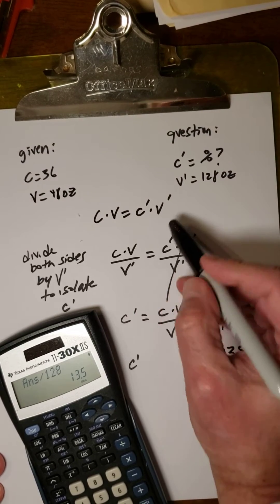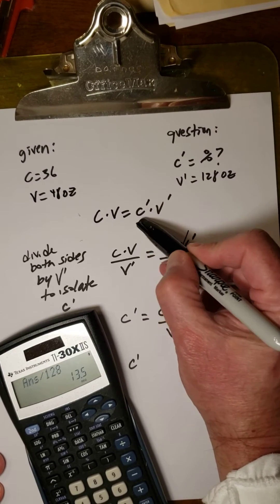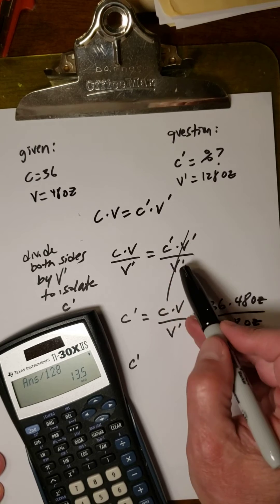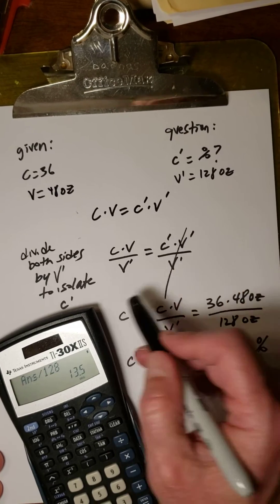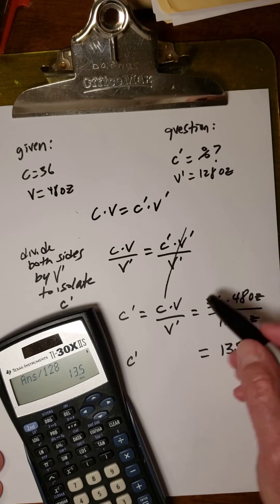This is the formula that we use and we're trying to find C prime. So I divided both sides by V prime to isolate C prime. I then flipped my equation and then plugged in the values.